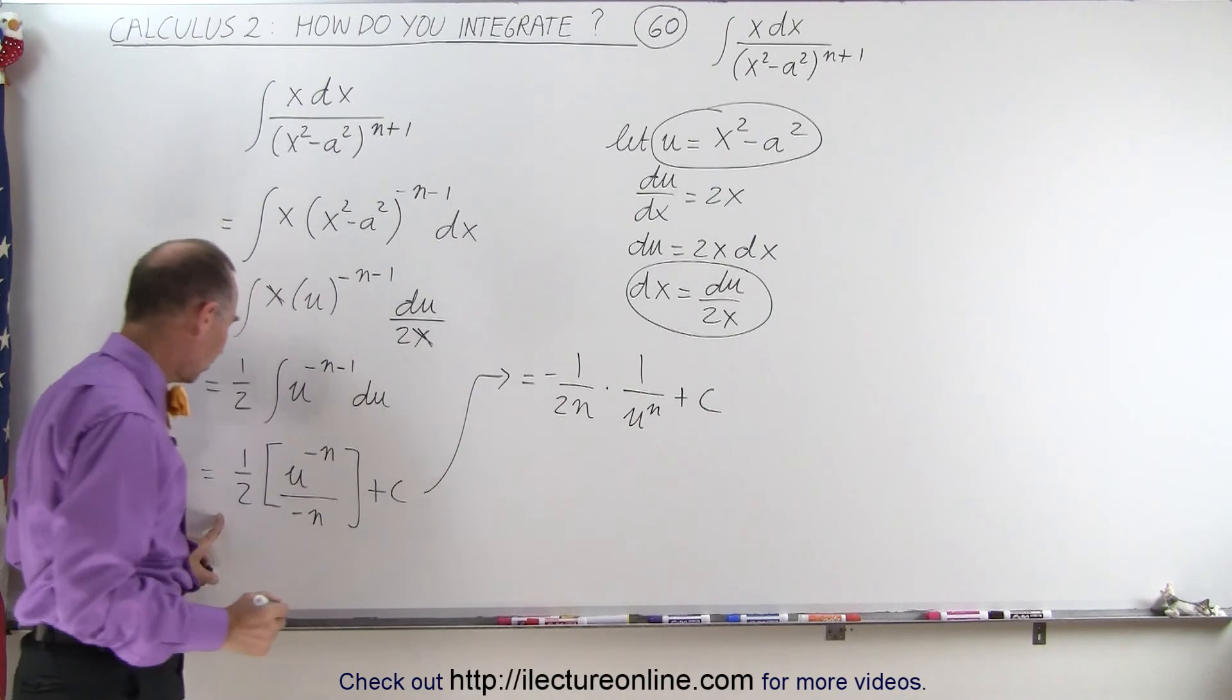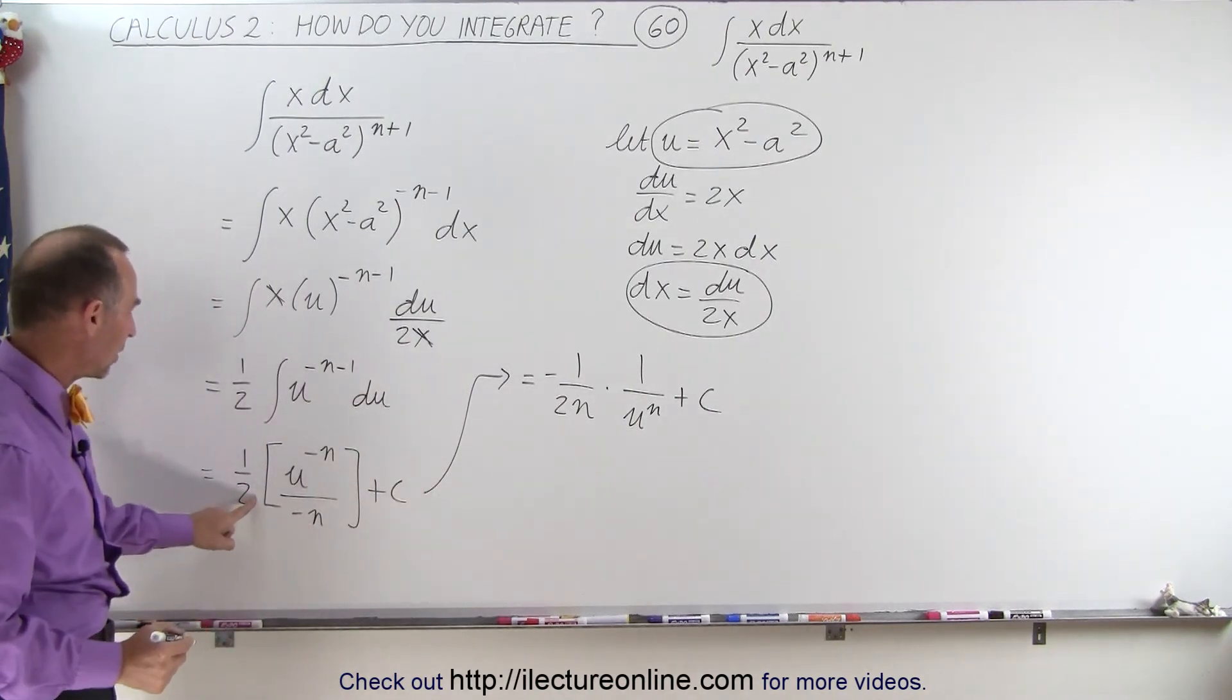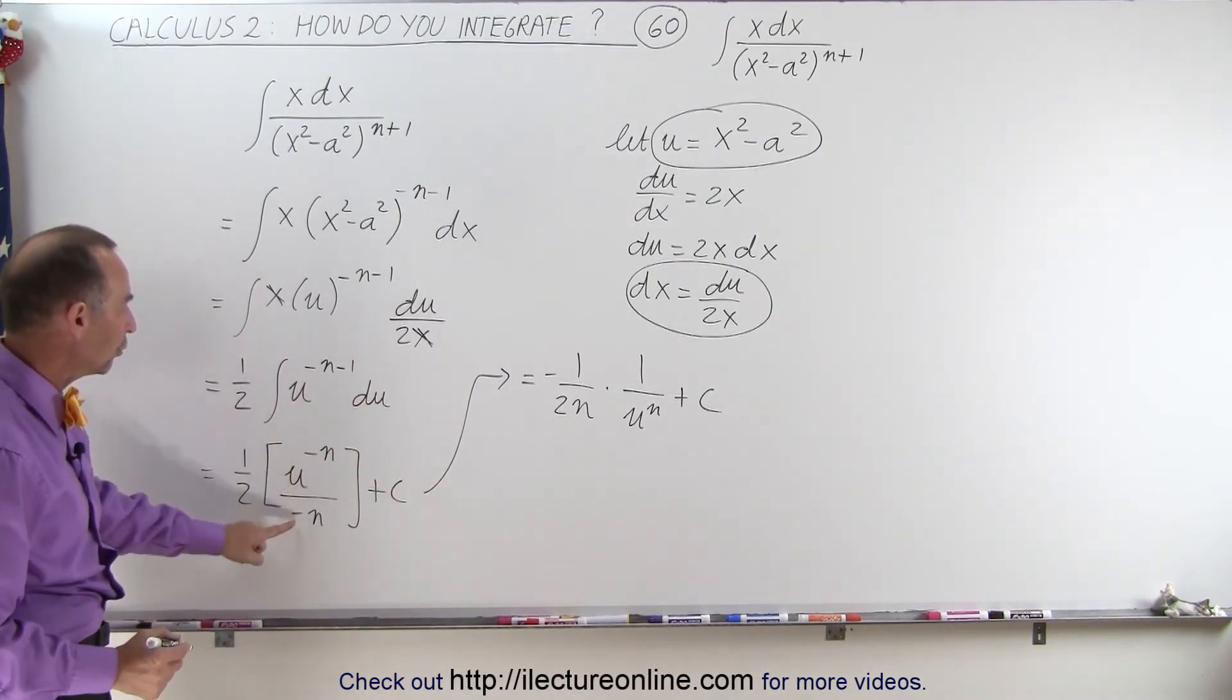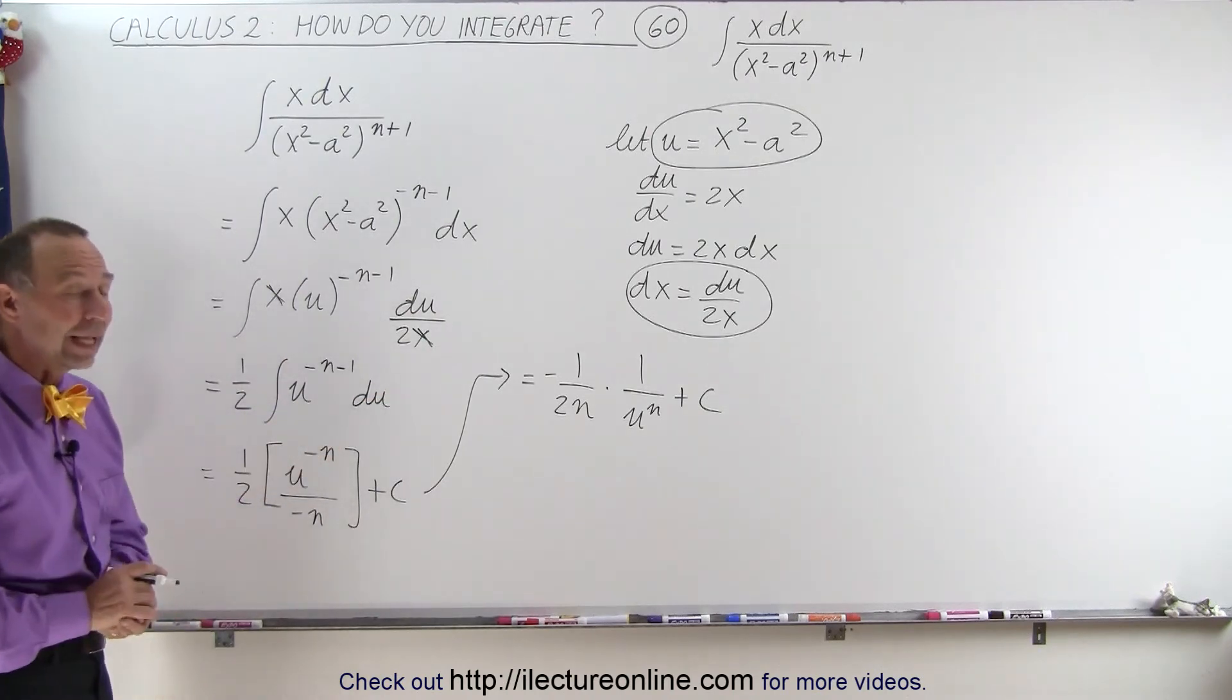Plus a constant of integration. So notice, the n goes over here, the negative over here, and I get 1 over u to the n to get rid of the negative exponent.